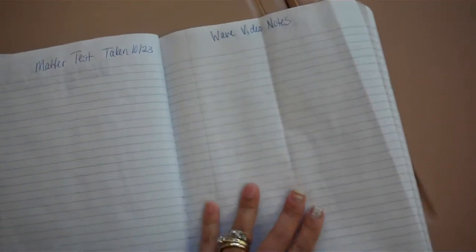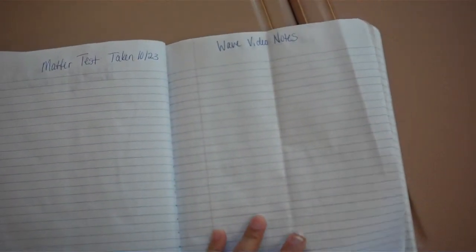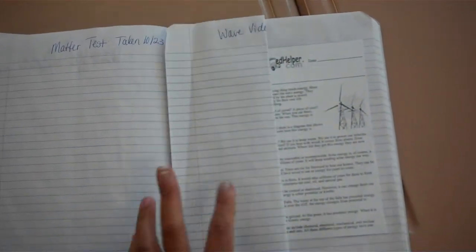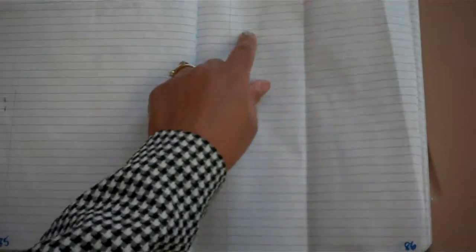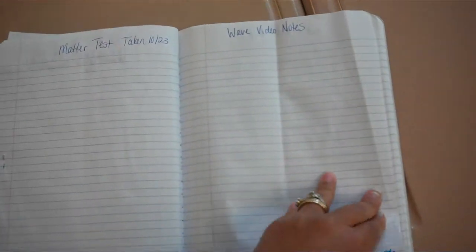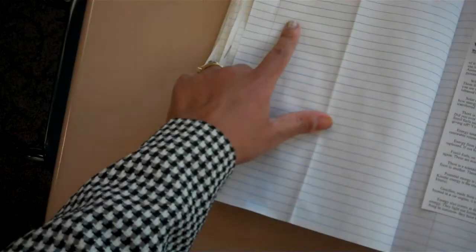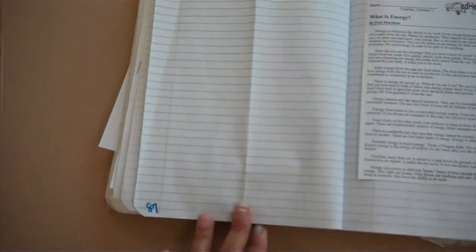Page 86 in your notebook should be wave notes video, 86 and 87, and it should be in Quino note format. That means folded in half, question on the left, answer on the right, question on the left, answers on the right on page 87 as well, the wave video notes from the Weebly.